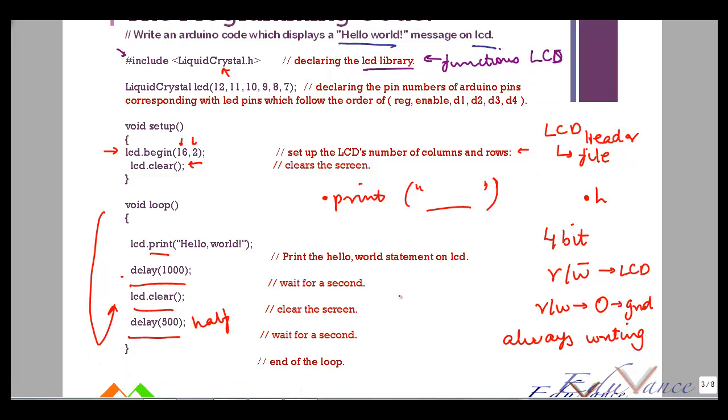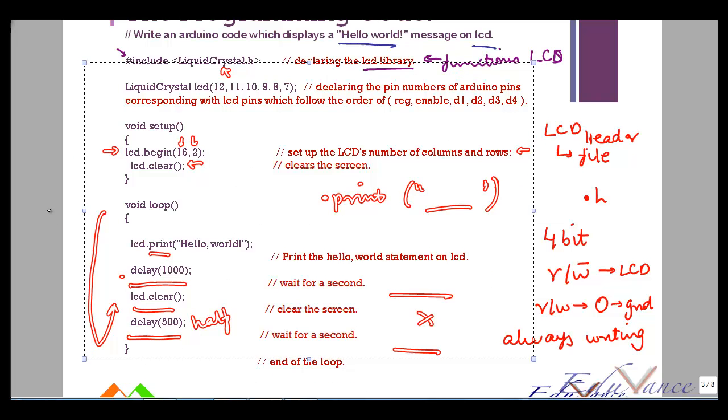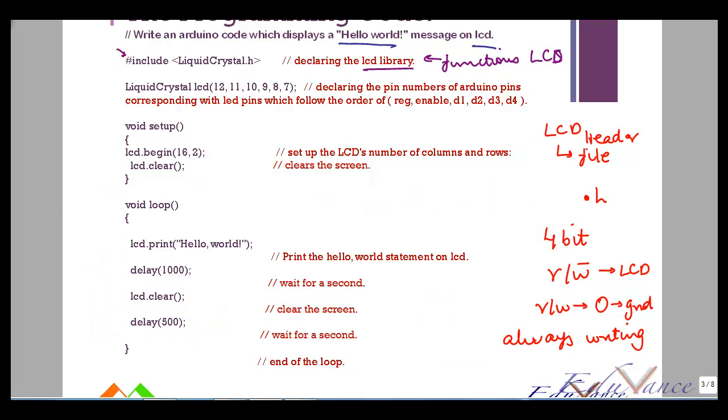And so basically I'll have the message, it will disappear, again I'll have the message, and so on. So it's a fairly simple program where I first initialize my LCD variable, I specify the number of rows and columns, I clear the LCD, then I print my message, and then I use a delay, I clear the LCD, and I use a delay again.